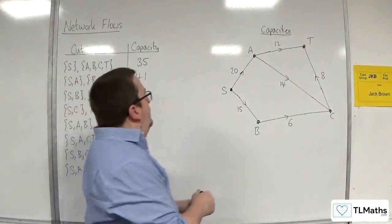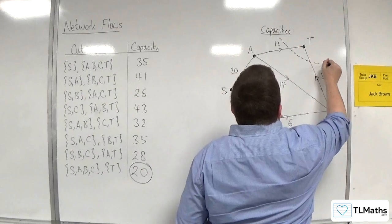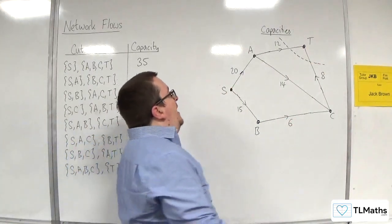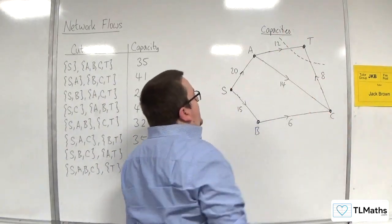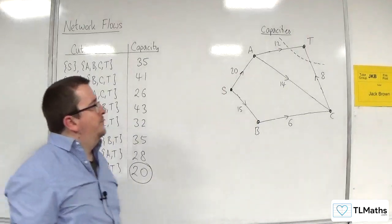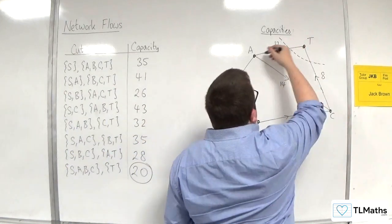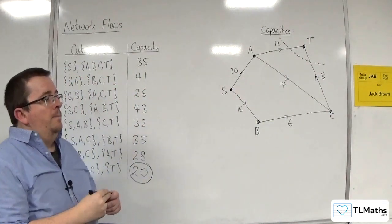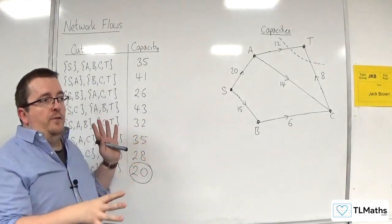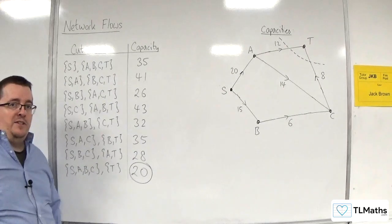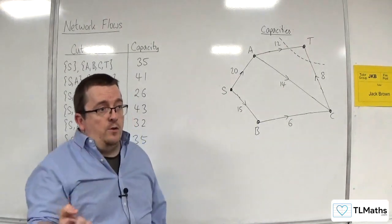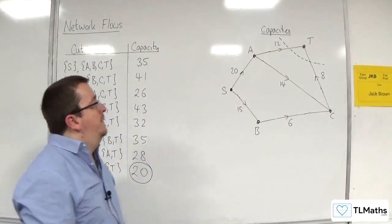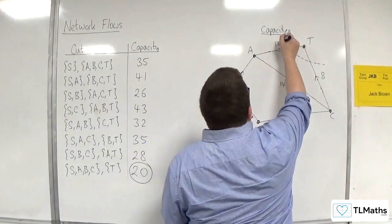Finding the cut that does that can sometimes be quite challenging. However, what is useful to know is that when you have that cut, the maximum possible flow through the network makes those edges saturated. This cut is the one that gives you the maximum flow, and that tells you that A–T and C–T have both got to be saturated. So they are both saturated: A–T and C–T.